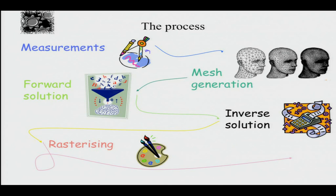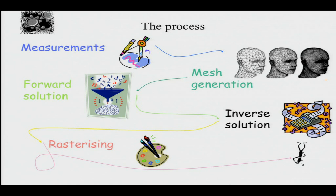To summarize the process: make the measurements, generate a mesh specific to the clinical application, solve the forward problem, solve the inverse, rasterize it, and give it to a clinician to interpret. It may not mean structure; it may mean change. For example, the images shown earlier were of volumetric change — that color indicated the total volume of the lung changing in time, not necessarily the shape of the lung. Respiratory clinicians need to know how the lungs are expanding, which is quite important because we still don't have a real-time method of looking at all lung inflation. The left lung might compensate for the right lung, or the bottom might work harder. This is a niche area where EIT can contribute.